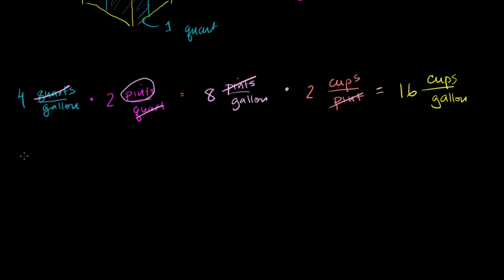So let's write it over here. So we're concerned with 3 and one half gallons. I don't like working with mixed numbers. I like to turn them into improper fractions. 3 and a half is the same thing as 2 times 3 is 6, plus 1 is 7. This is the same thing as 7 over 2.